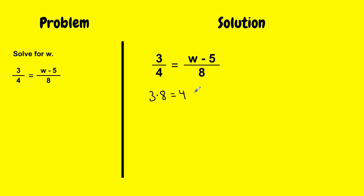Since I'm multiplying 4 with two terms, I have to make sure I represent that inside the parentheses because I have to apply the distributive property. 3 times 8 is 24 equals, and if I use the distributive property, I get 4w minus 20.